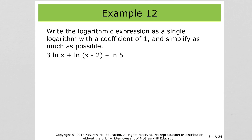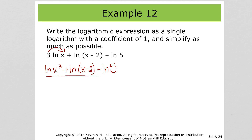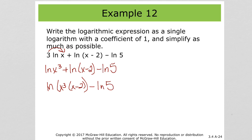For this one, first take that 3 and put it on the x: natural log of x cubed plus natural log of (x minus 2) minus natural log of 5. Working left to right per order of operations, take care of the addition first: natural log of (x cubed times (x minus 2)). Remember, there's nothing we can do with that x minus 2 inside. Then minus natural log of 5, and since we're subtracting, change it to division: natural log of (x cubed times (x minus 2)) over 5.